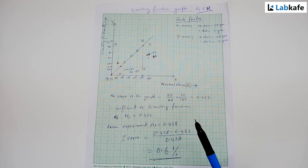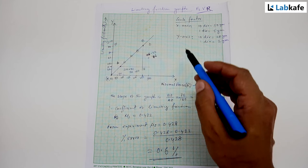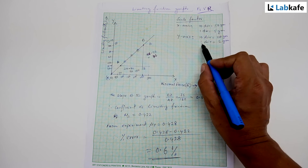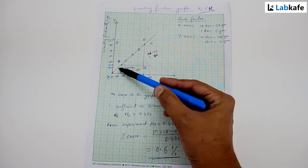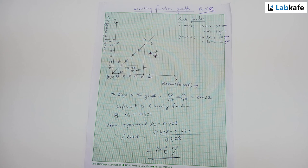After taking the reading from the experiment, I have plotted a graph between normal force R versus limiting force μs. On the y-axis it is limiting force and on the x-axis it is normal force. The scale factor along x-axis is 10 divisions equals 50 grams, so 1 division equals 5 grams, and along y-axis 10 divisions equals 20 grams, so 1 division equals 2 grams. The graph shows a straight line passing through the origin.